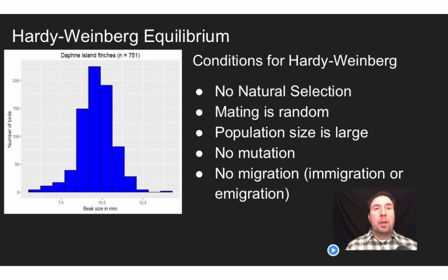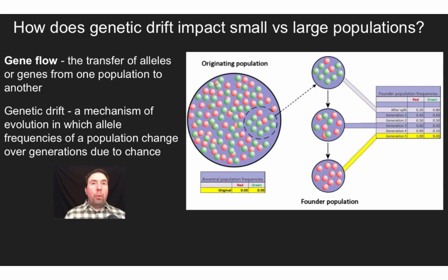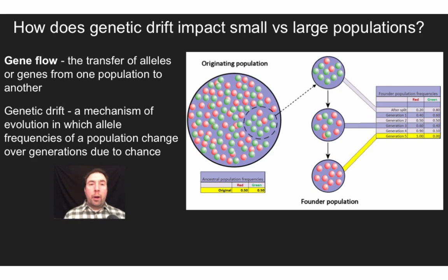If these five criteria are met, there will be no shift in allele frequency over time. So what would happen if we saw violations of these? One way we could see a shift in allele frequency is through gene flow — the transfer of alleles or genes from one population to another. If there's immigration or emigration, genes that flow into or out of the population violate Hardy-Weinberg and lead to shifts in allele frequency.